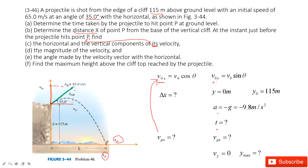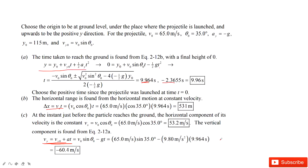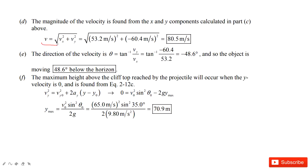The next part asks for the magnitude of the velocity at point P. You have Vpx and Vpy, so the magnitude is the square root of Vpx squared plus Vpy squared. And for the angle of the velocity, you take the arctangent of Vy over Vx. These are both straightforward calculations.